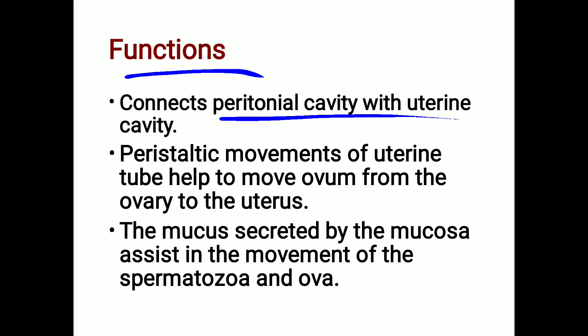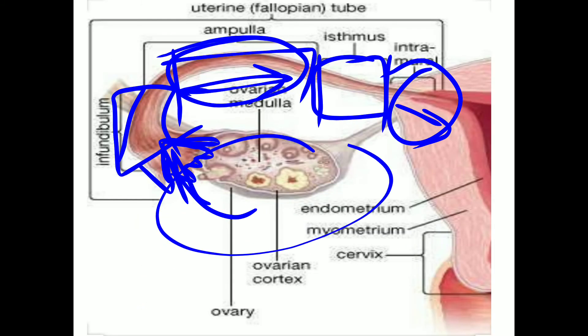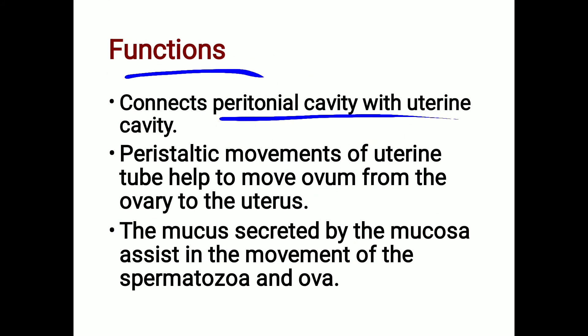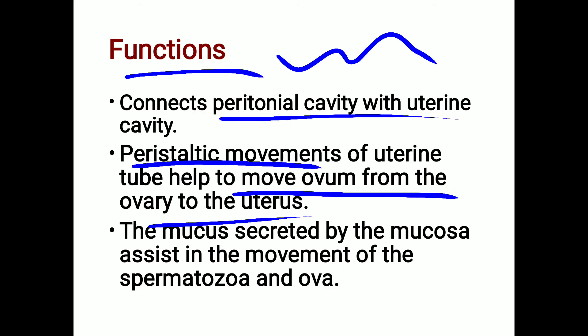The functions of the uterine tube include: it connects the peritoneal cavity with the uterine cavity. Peristaltic wave-like movements in the uterine tube help move the ovum from the ovary into the uterus. These peristaltic movements are due to rhythmic muscular contractions of the muscular wall.